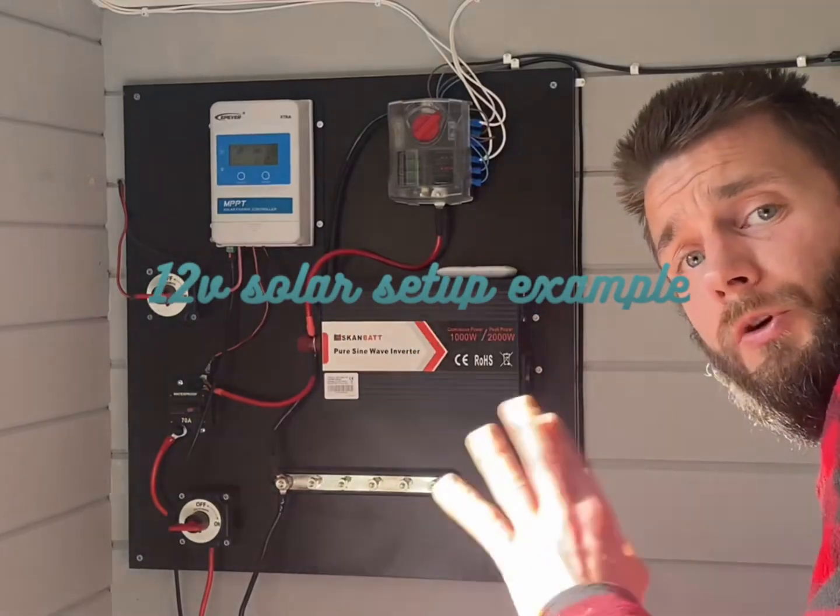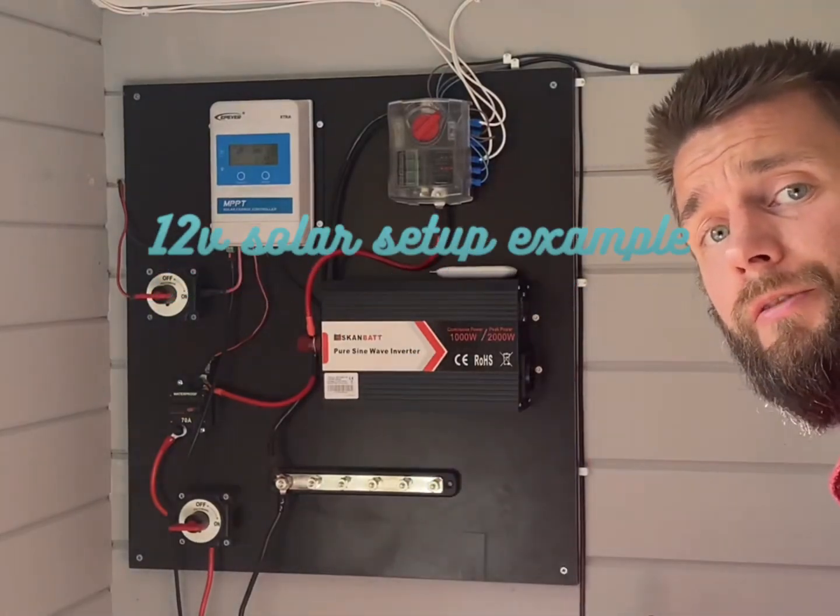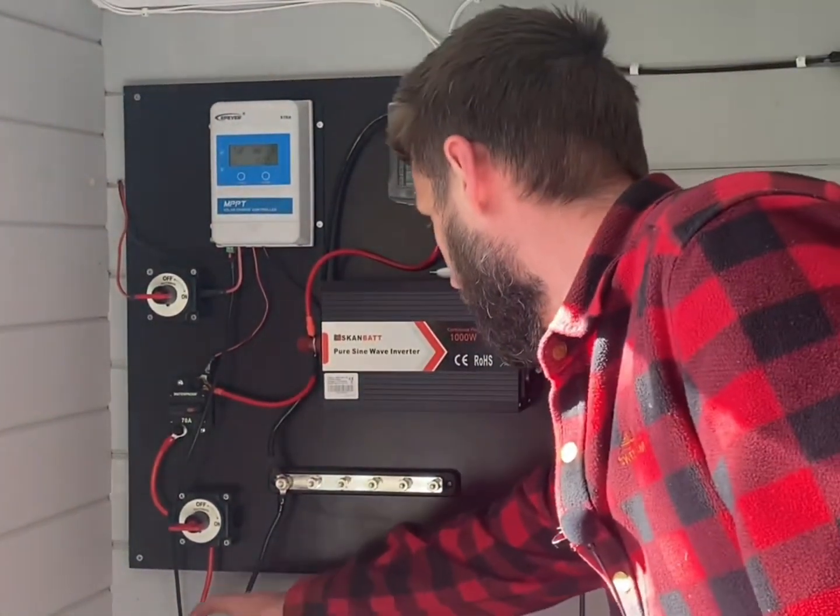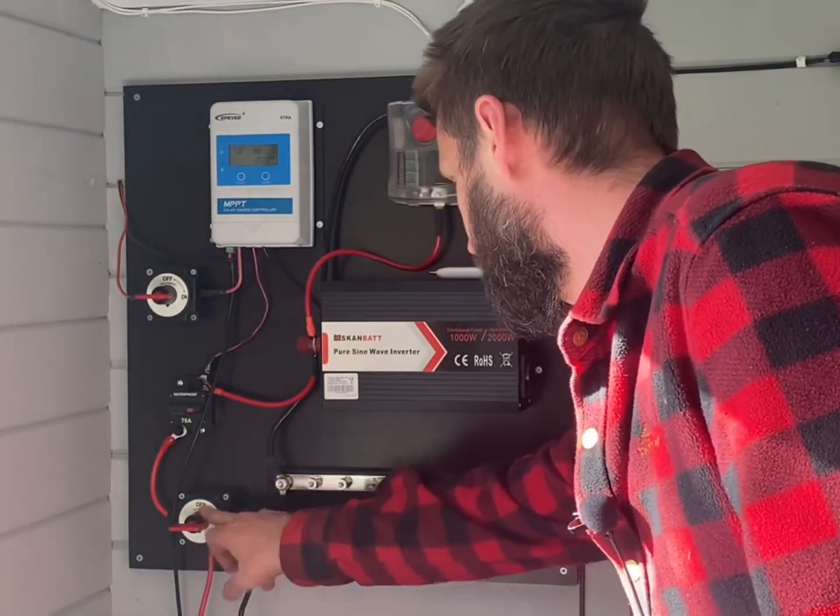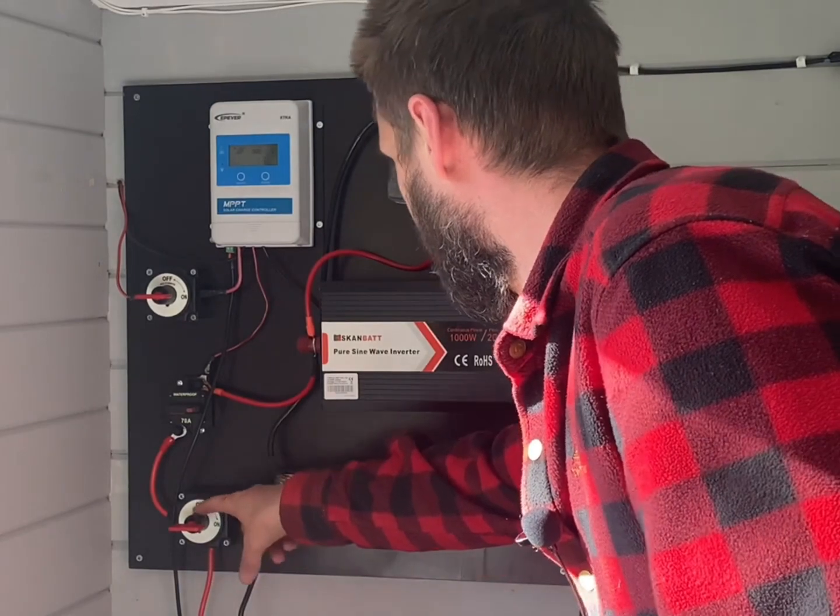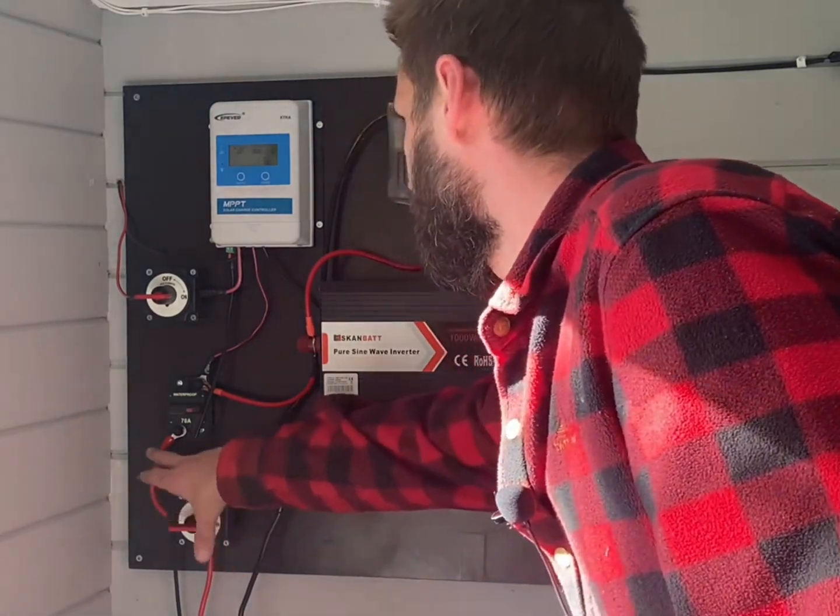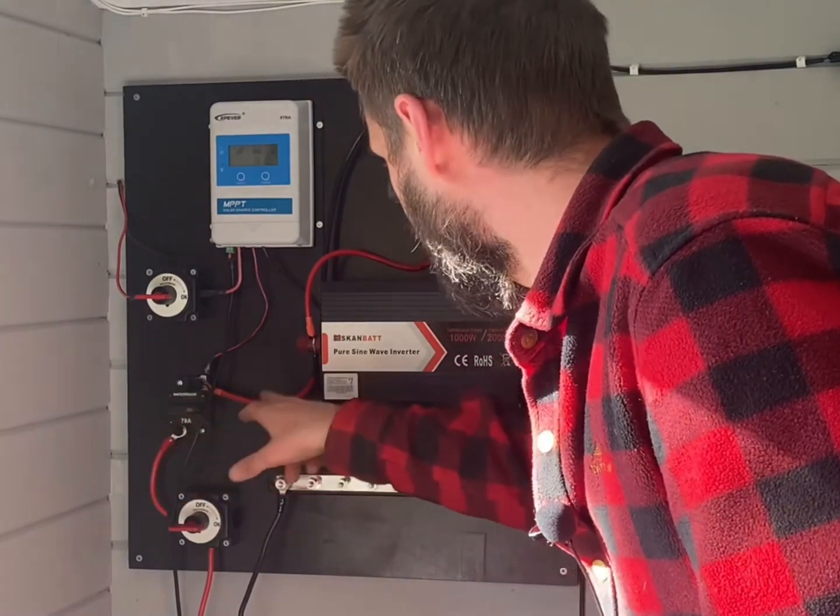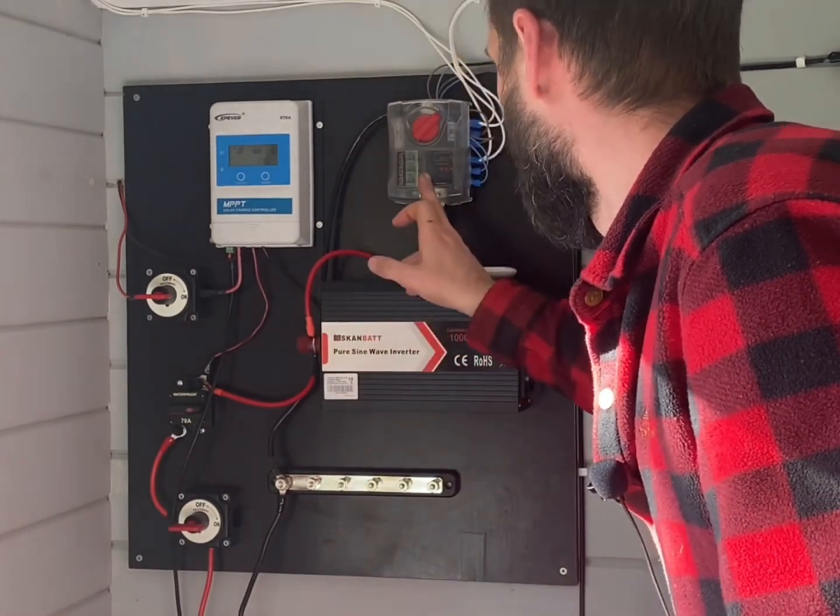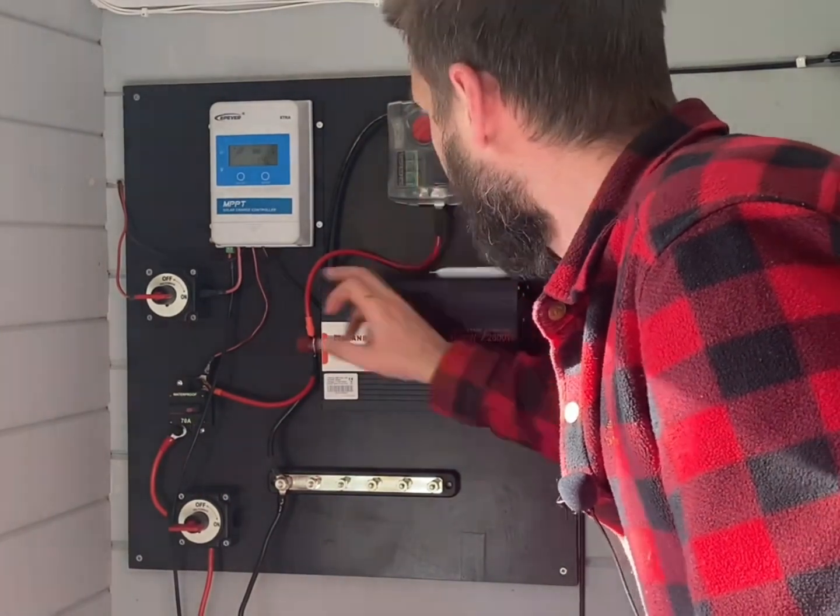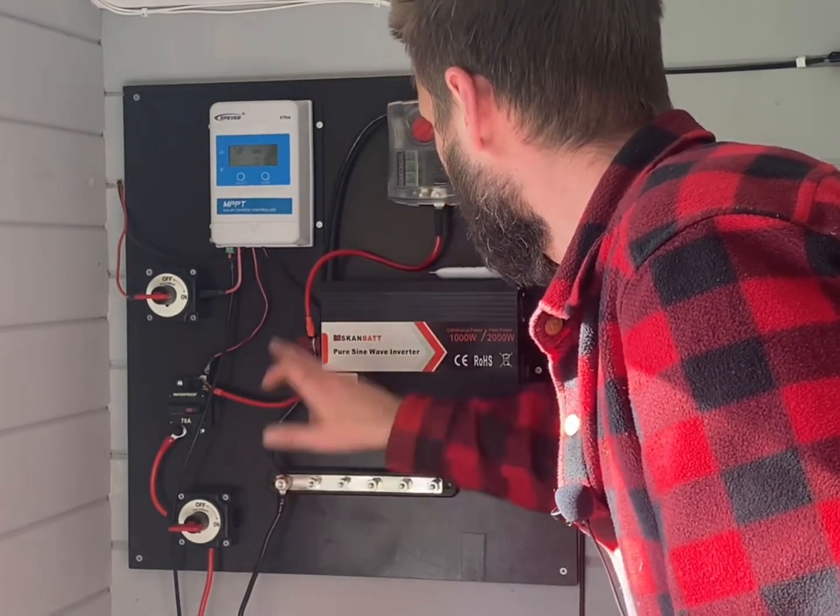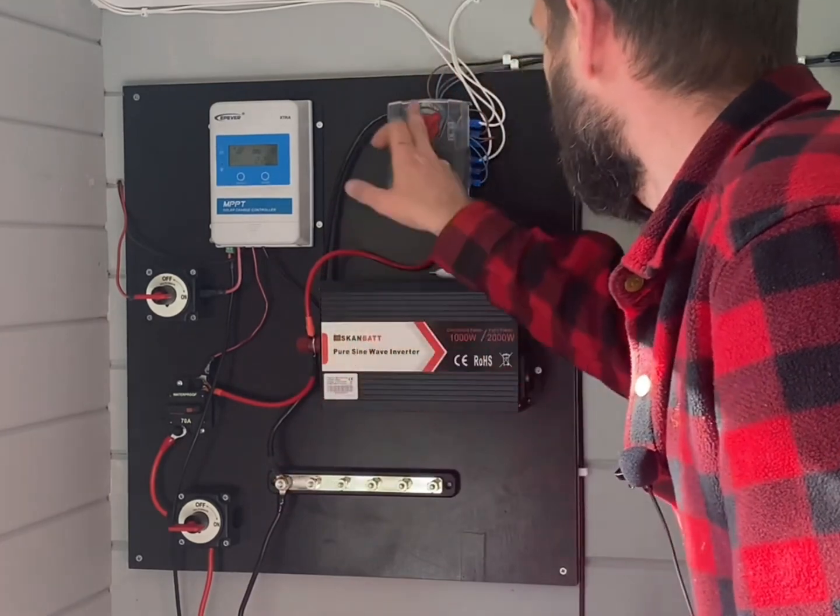This is the small 12 volt solar power system for the off-grid cabin. It's really quite simple. The batteries come up here, positive side into the switch, negative into the bus bar. From the breaker, positive goes to this fuse and into the inverter, into the 12 volt breaker panel.